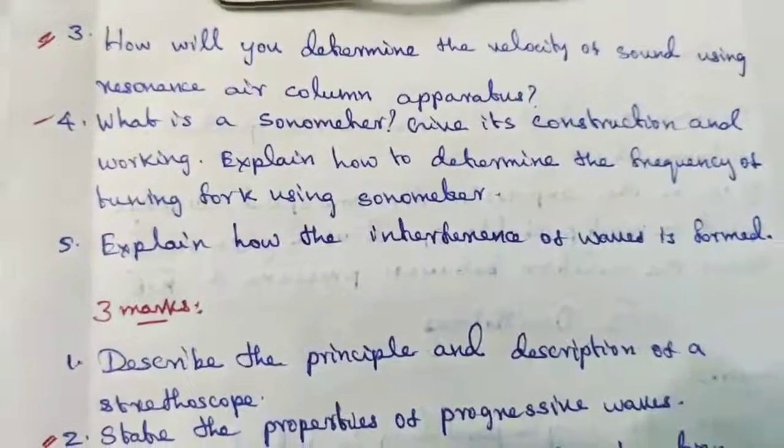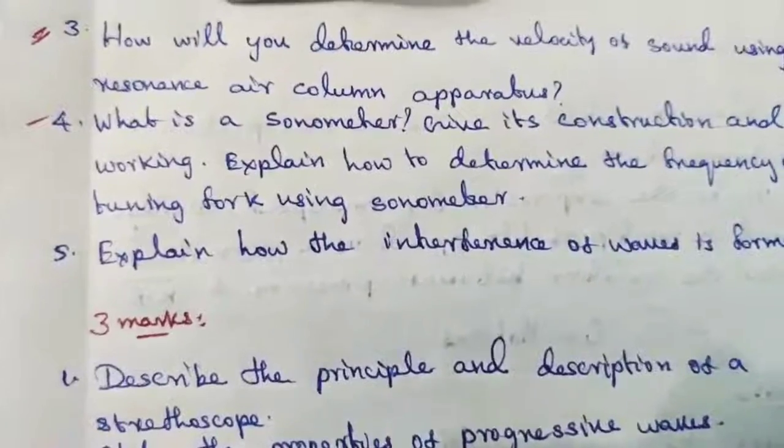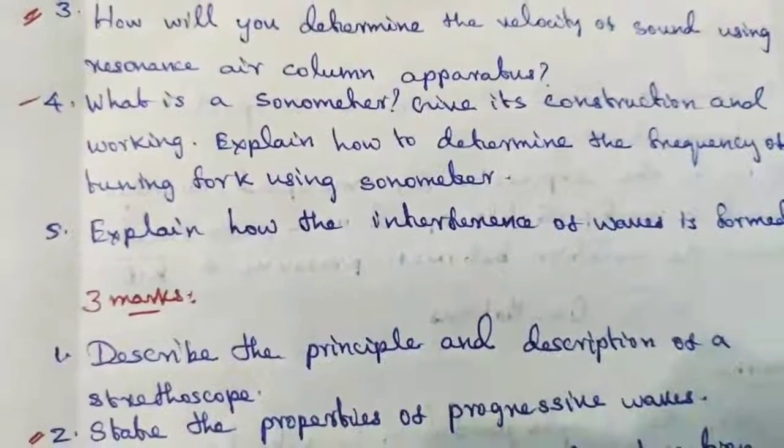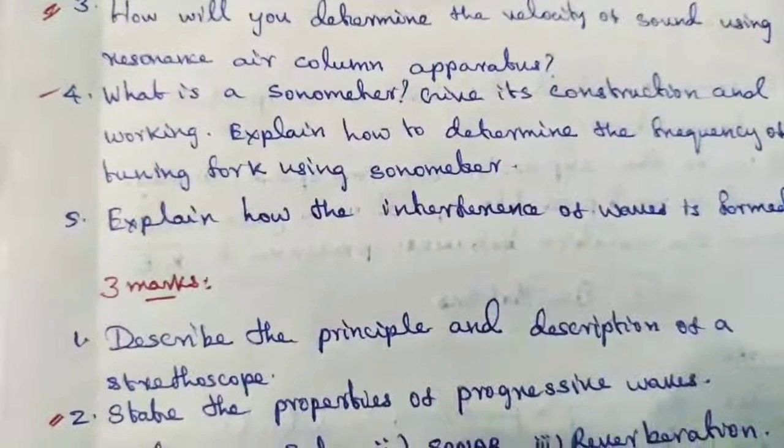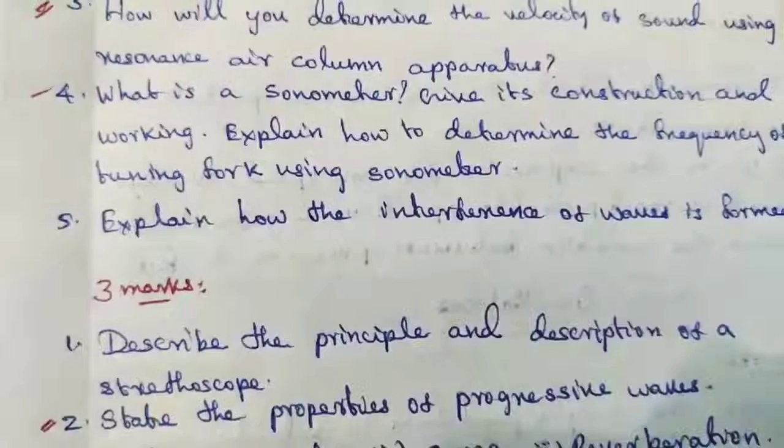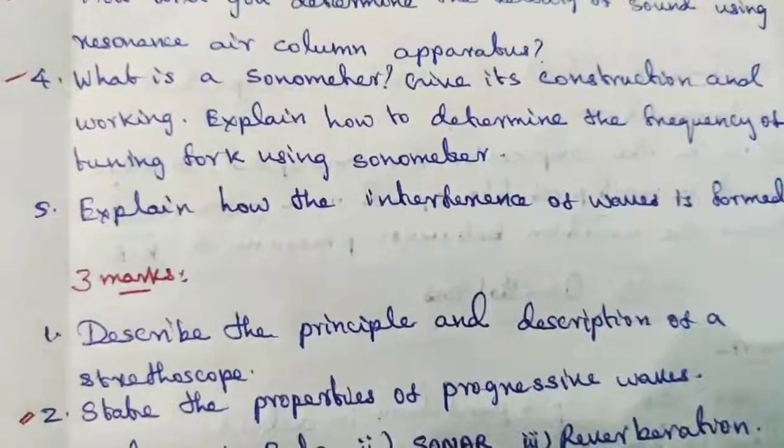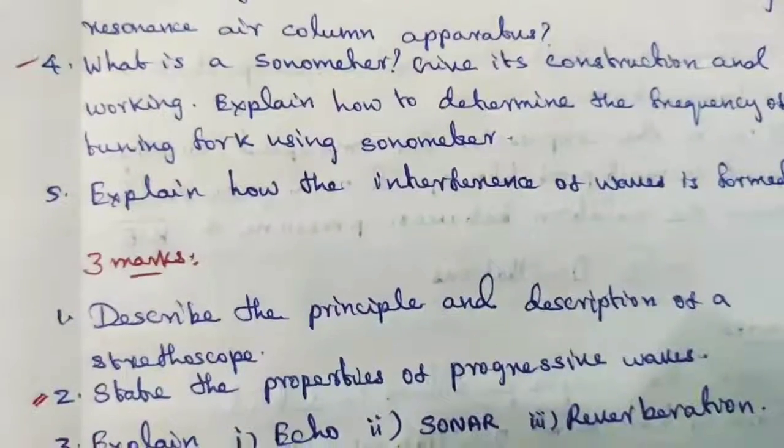How will you determine the velocity of sound using resonance air column apparatus? What is a sonometer? Give its construction and working. Explain how to determine the frequency of tuning fork using sonometer. Explain how the interference of waves is formed. Describe the principle and description of a stethoscope.